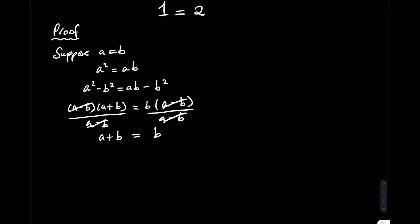Well, I've assumed that A is equal to B. Therefore, I can write B plus B is equal to B. But B plus B is 2B. So 2B is equal to B. Now I can divide both sides by B to give me 2 is equal to 1. And that there is the end of my proof.